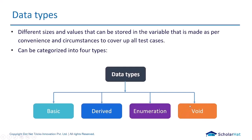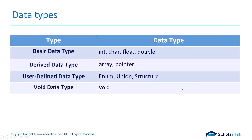One more data type is void, which is not basically a data type — we're going to use it as a return type of a function. In basic or primitive data types you can see characters, integers, float, double, and void all come into it.